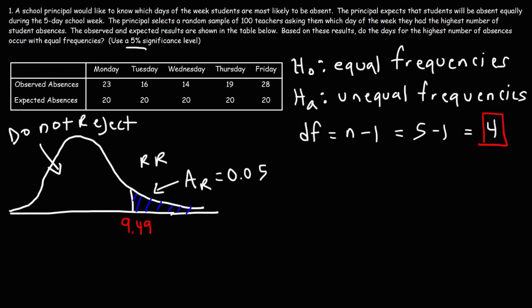And now we need to get our calculated chi-square value. And the formula that we're going to use is this formula. It's going to be sigma, which represents the sum of the difference between the observed values and the expected values squared, divided by the expected values. And we could find this in a table. So the first row contains the observed values, and the second one contains the expected values, which have equal frequency.